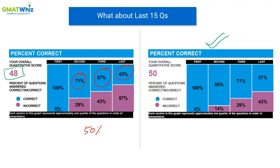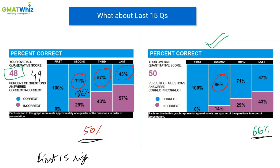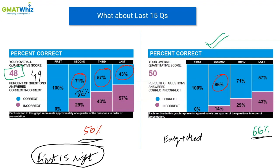If this student had matched accuracy to 86% in the second quarter, they would have ended up with a 49 for sure, even with just 50% accuracy in the last two sets. The last two sets do matter — I'm not saying get all of them wrong — but maintaining around 50 to 66% accuracy in the last 15 questions will still do the job. The main thing is to get the first 15 right. That is the core testing strategy: get the easy and medium questions right for every topic.